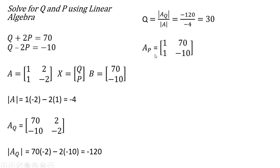And in terms of the variable price, we're going to replace this second column of the coefficient matrix with the constants. And now we'll take the determinant of this A subscript P matrix, which is 1 minus 10, minus 70 times 1, or minus 80.